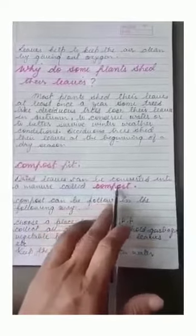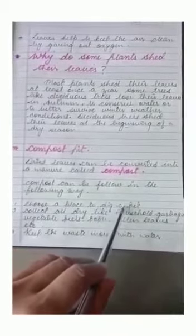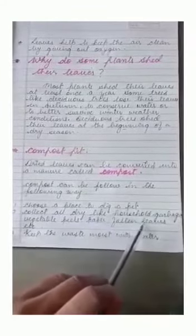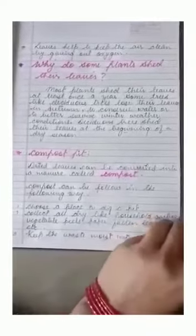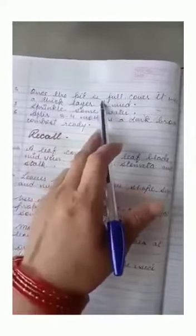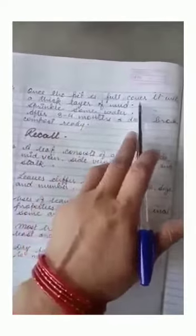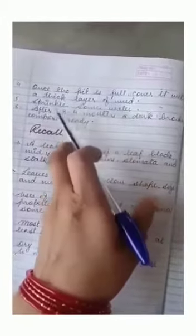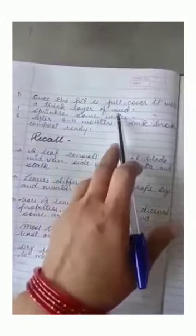Now, compost pit. Dried leaves can be converted into manure called compost. Compost can be made in the following ways: We need to choose a place to dig a pit, then collect all the dry household garbage, vegetable peels, paper, fallen leaves, etc. Then we need to keep the waste moist with water. Once the pit is full, we need to cover it with a thick layer of mud and sprinkle some water daily.